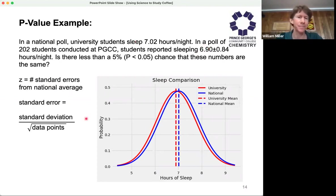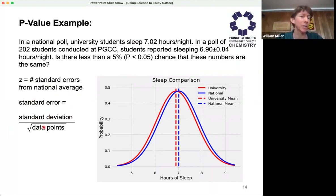I've defined the standard error — it's the standard deviation divided by the square root of the number of data points, so divided by the square root of 202 here.